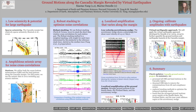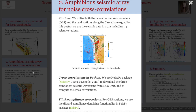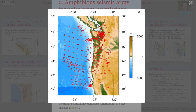In this study, we extracted the surface wave propagation information, including the travel time and amplitude information, from ambient noise cross-correlations to characterize ground motions along the Cascadia margin. The deployment of the amphibious seismic array covering the Cascadia margin provides a unique dataset for our study.